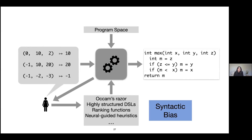In inductive program synthesis as well there are many attempts to apply inductive biases, but what is common to almost all of this work is essentially a syntactic bias. One could use Occam's razor to steer search toward the smallest program, design highly structured DSLs that syntactically restrict the space of programs, or use ranking functions and neural-guided search heuristics, which are also typically based on syntactic features of programs.